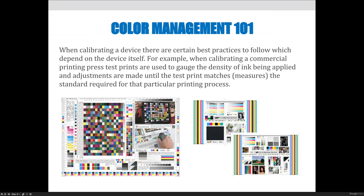When calibrating a device, best practices depend on the device itself. For a commercial printing press, test sheets are used to gauge ink density and adjustments are made until the test print matches the required standard. We print the sheet, then measure it using densitometers and spectrophotometers to measure ink density and the wavelength of color produced. If a 70% yellow halftone dot is printing at only 40%, we adjust the press until it outputs the correct measurement. That's a broad description — it's much more complicated than that.